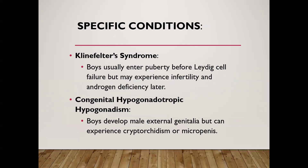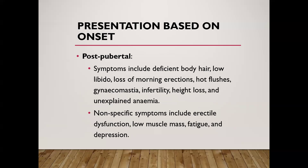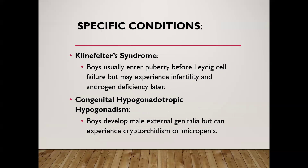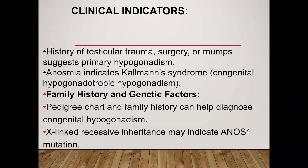Post-pubertal symptoms include deficient body hair, low libido, loss of morning erections, hot flushes, gynecomastia, infertility, height loss, and unexplained anemia. Non-specific symptoms include erectile dysfunction, low muscle mass, fatigue, and depression. Regarding specific conditions: in Klinefelter syndrome, boys enter puberty before Leydig cell failure but may experience infertility and androgen deficiency later; in congenital hypogonadotropic hypogonadism (CHH), boys develop male genitalia but can have cryptorchidism or micropenis; Y-chromosome microdeletions result in small testes and infertility but with normal testosterone and LH levels; and Pasqualini syndrome presents with post-pubertal testicular volume and some spermatogenesis but low serum testosterone.